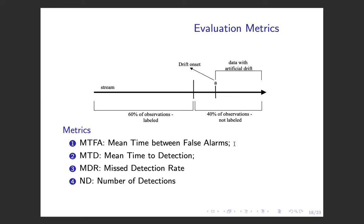We focus on evaluating the reaction of the detectors to the drift. We measure the mean time between false alarms of the detectors, the mean time to detect the drift, the missed detection rate, and the absolute number of detections on average in each of the repetitions.